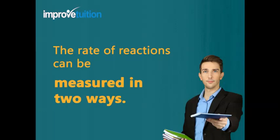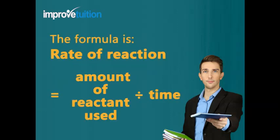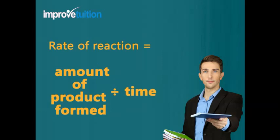The rate of reactions can be measured in two ways. First, measure the formation of a product. The formula for rate of reaction is: the amount of reactant used divided by time. Alternatively, the amount of product formed divided by time.